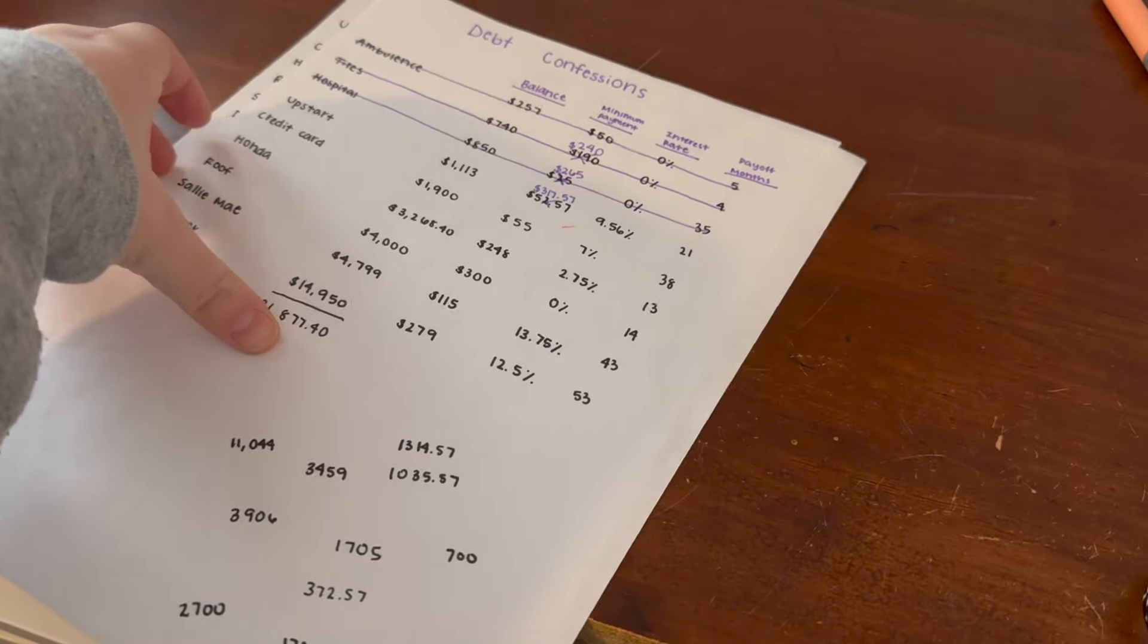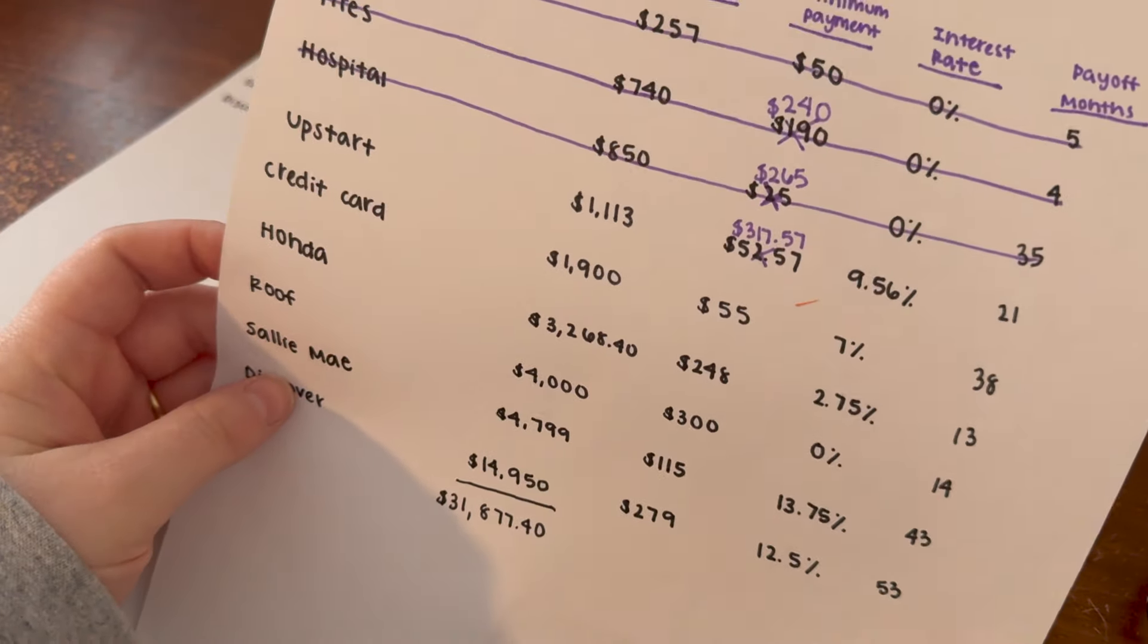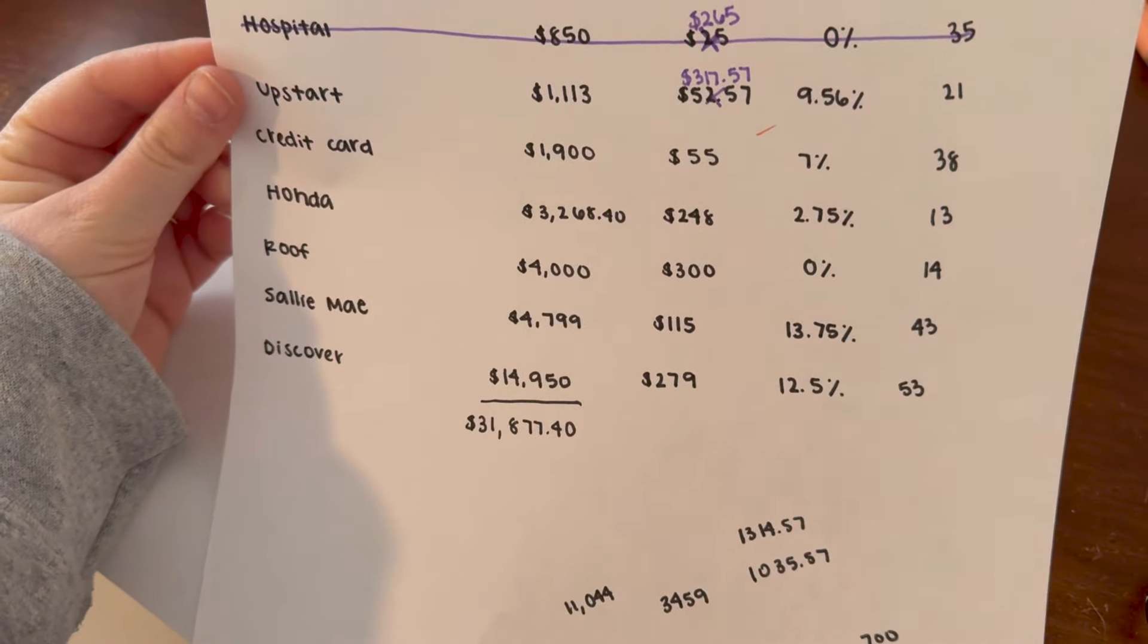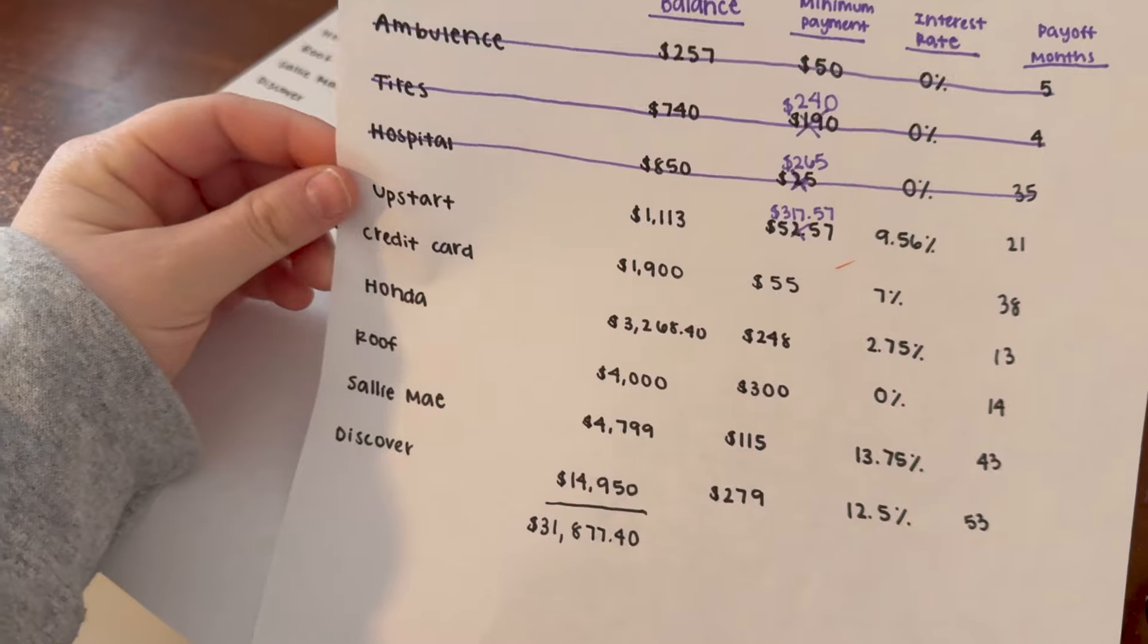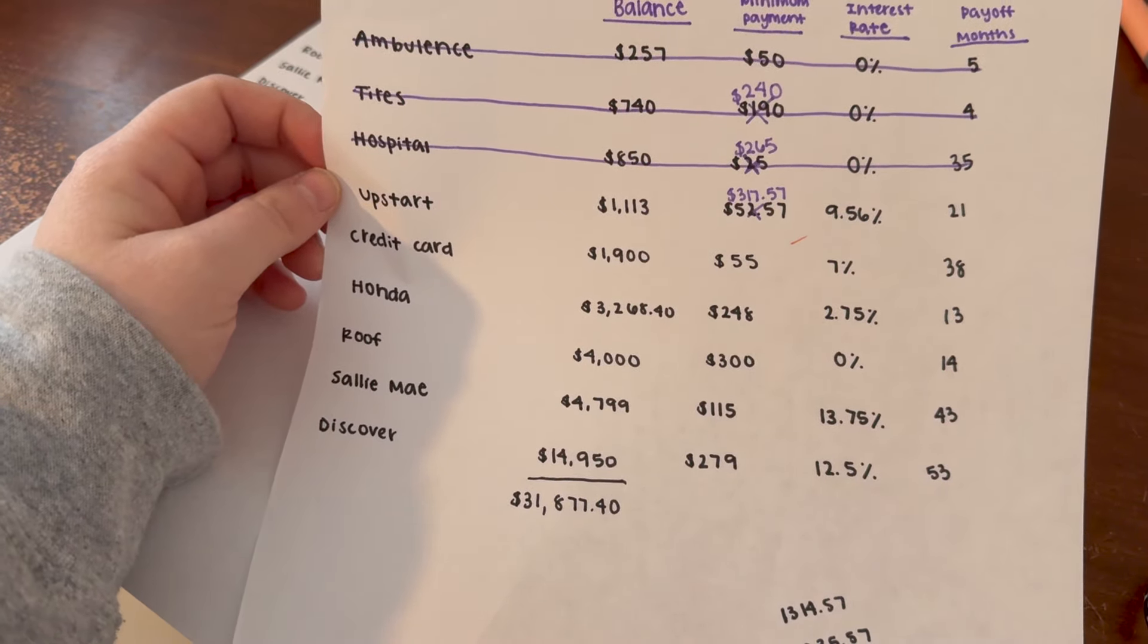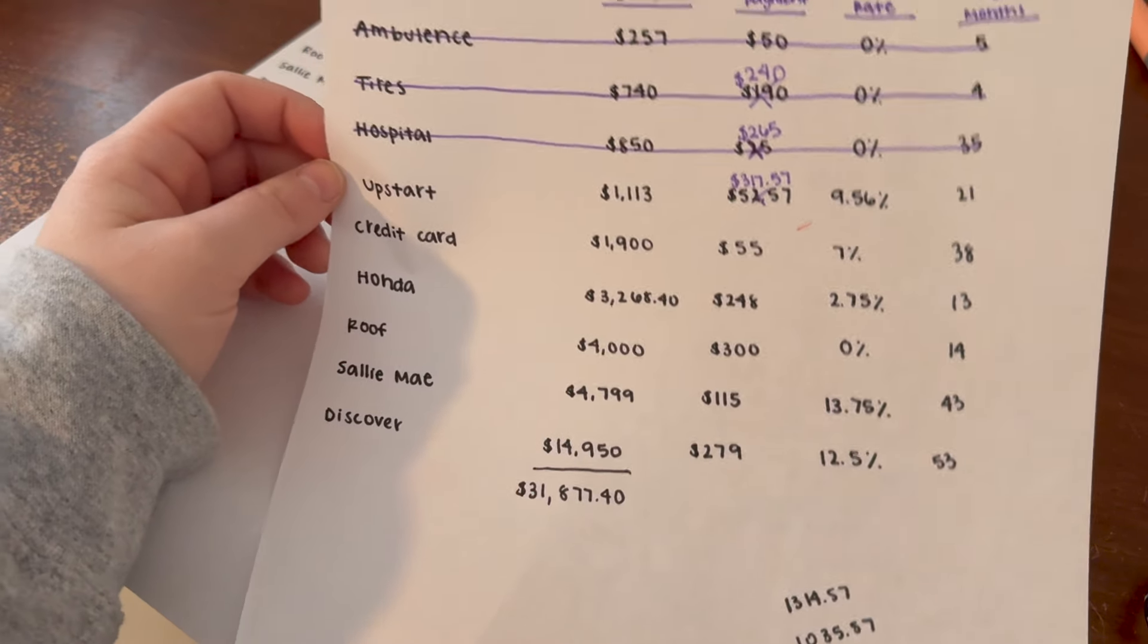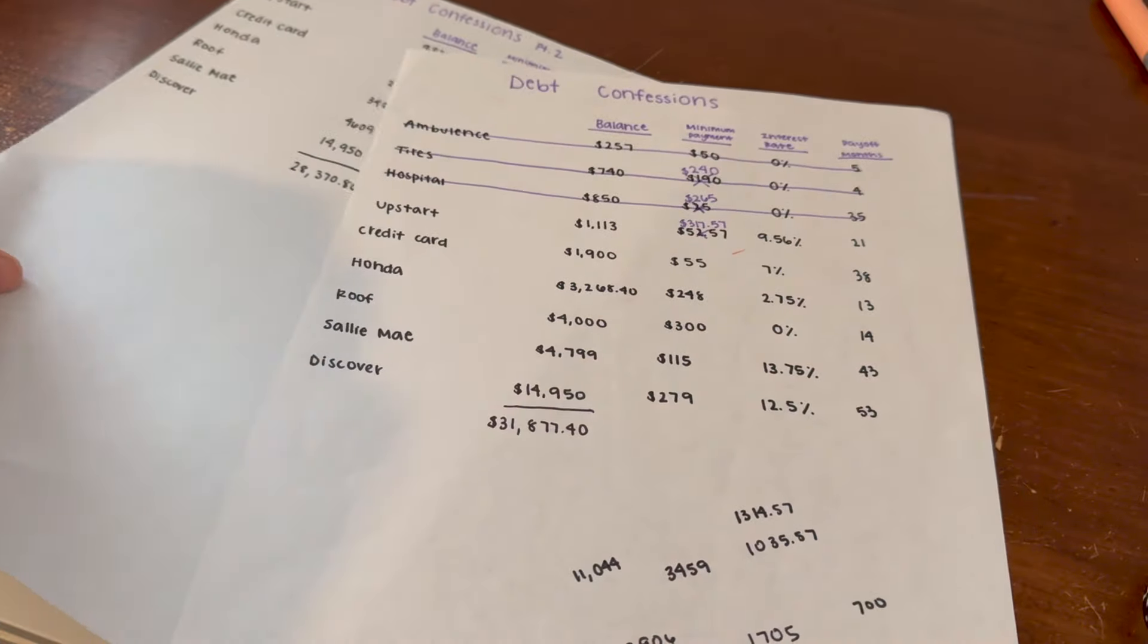You'll have to excuse my scribbles, but this is Part 1 and I like to keep both of my sheets so I can hold myself accountable. If you remember, we started off with $31,877.40 in debt and we had all of these debts that we are working towards paying off. Please don't come for me, I know I spelled ambulance wrong but I'm not going to fix it.